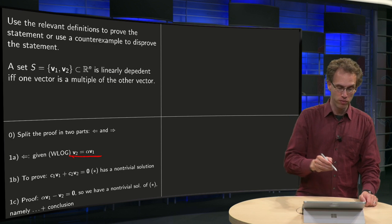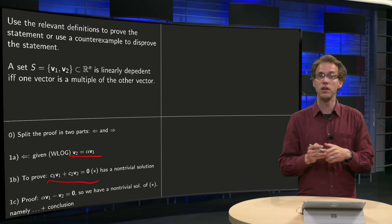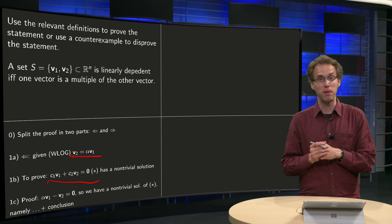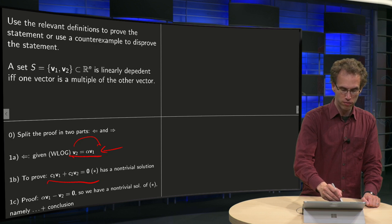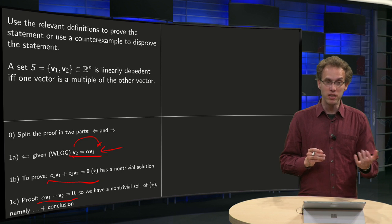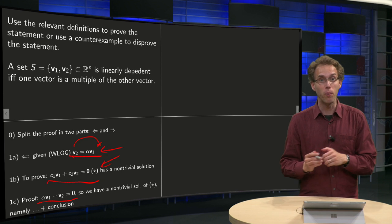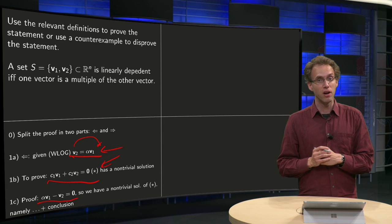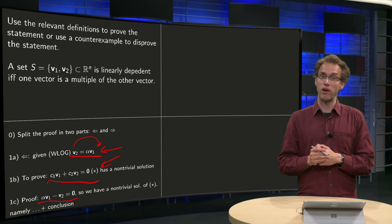Now you have to prove that this equation only has a non-trivial solution — that's what it means for S to be dependent. You start with this equation, bring v2 to the other side, and you get: alpha times v1 minus v2 equals the zero vector. So that means we have a non-trivial solution of the equation, and we can conclude that S is dependent.